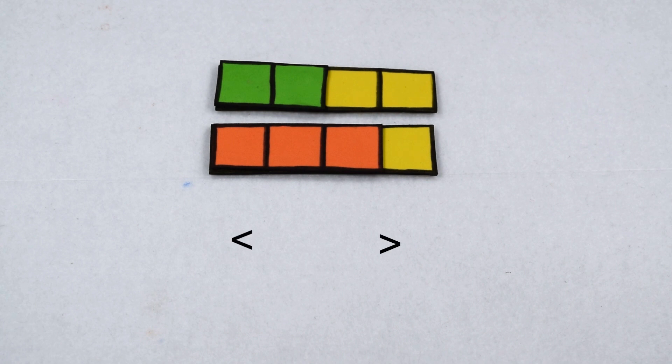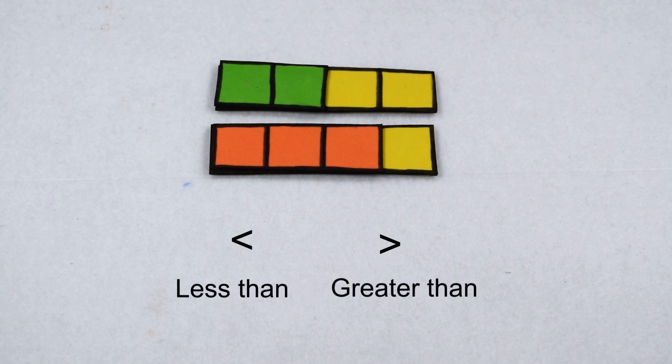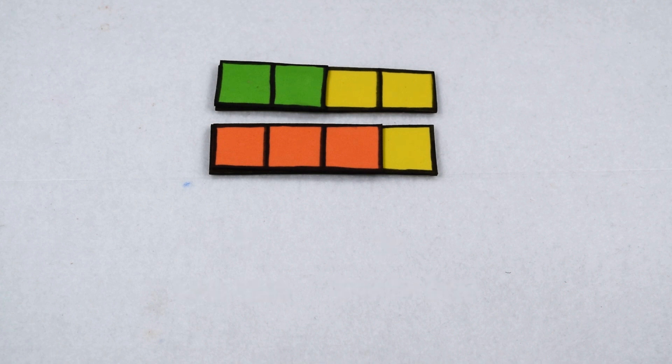When we compare two values, we use less than or greater than. Our first symbol means less than - the value on the left is worth less than the value on the right. Our other symbol means greater than - the number on the left is worth more than the number on the right. We can think of it as our open end always facing the larger value.